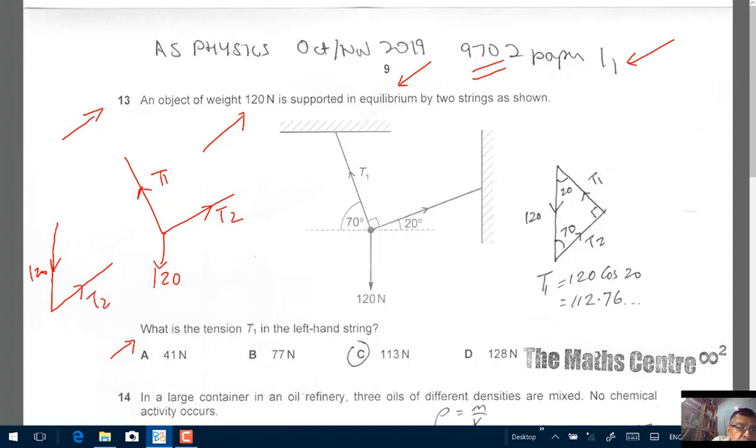So let's label this T2. This will be T1. So between T1 and T2, this is 20, this is 70. So this is 90 degrees. So we have 90. And then between 120, between the 120 force and T2, we have 90 minus 20 will be 70 degrees. And between the 120 force and T1, you will have 20 degrees.